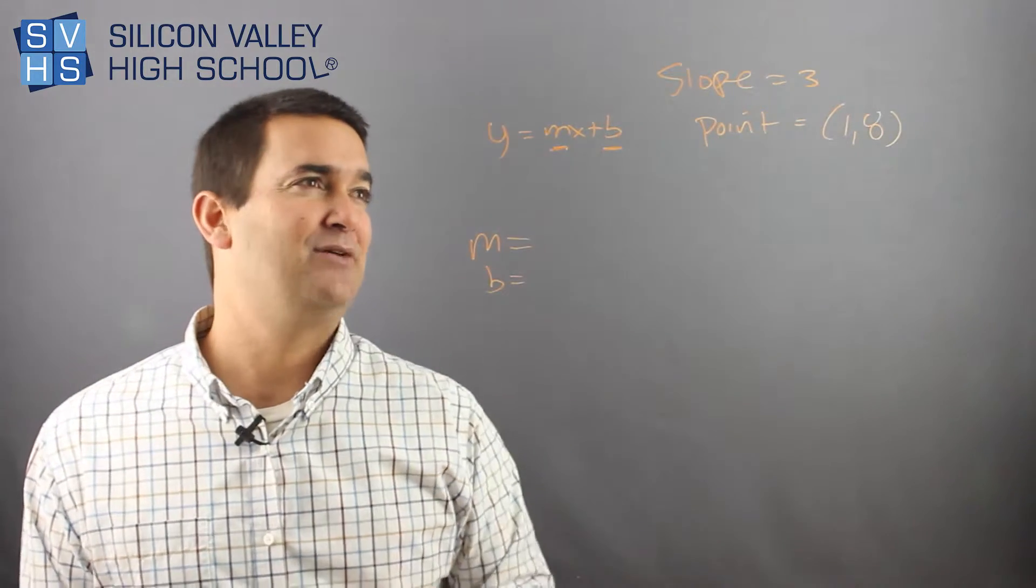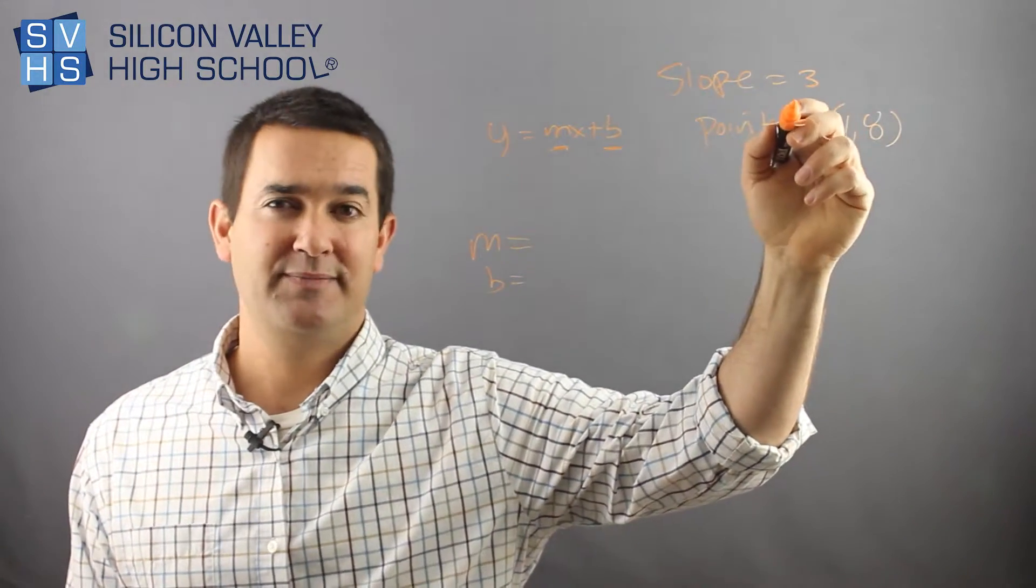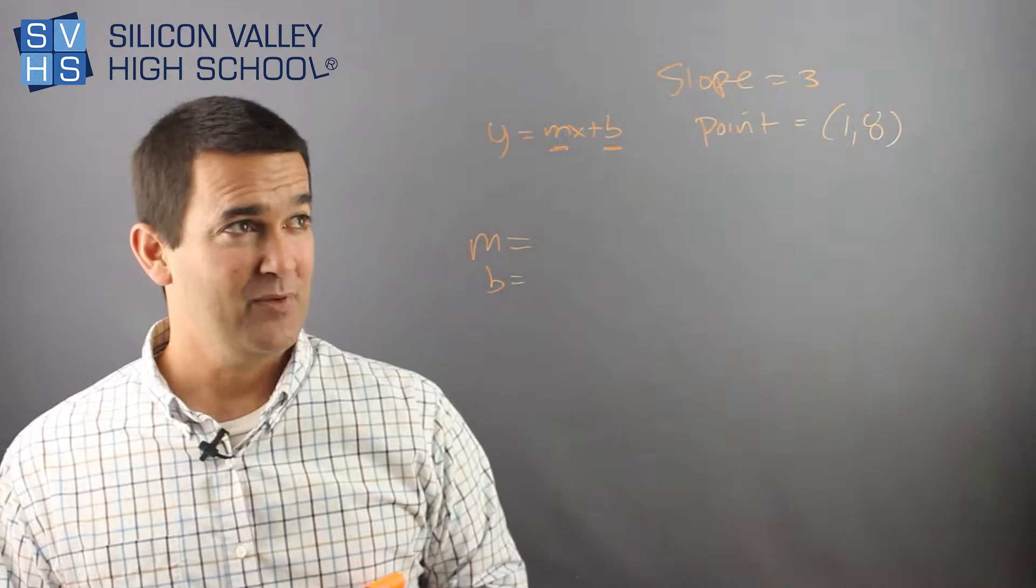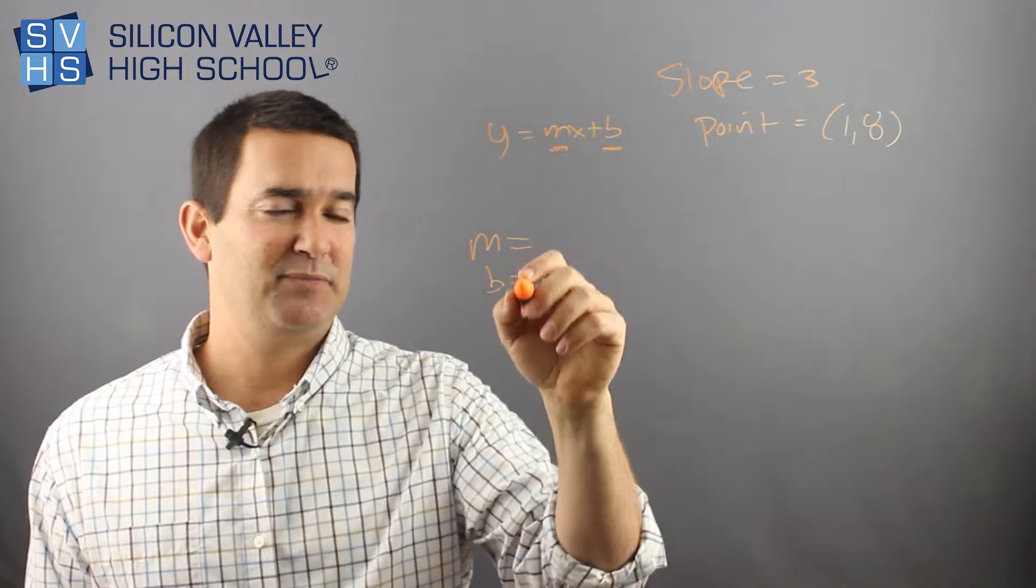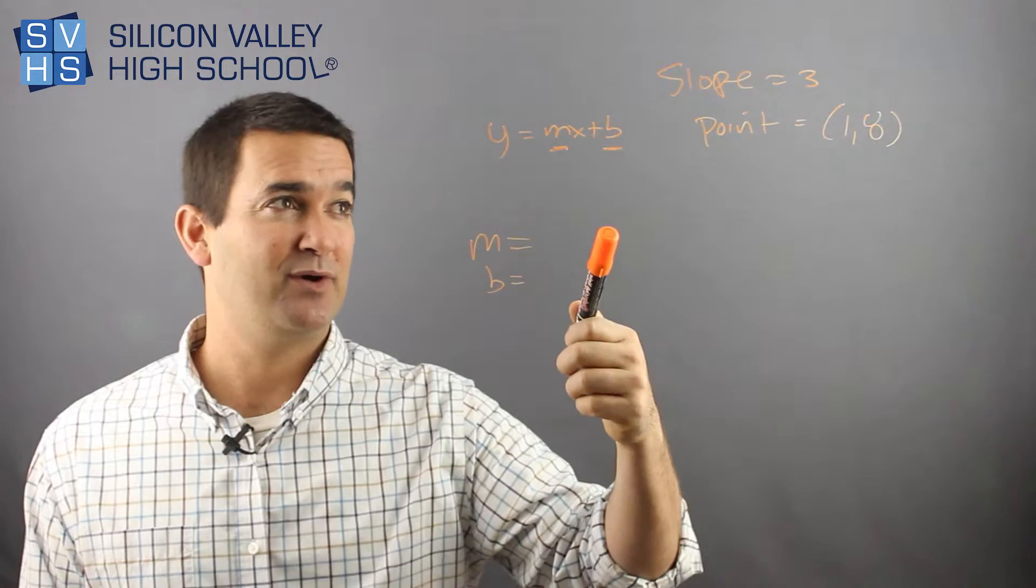So in this case, this is pretty mellow. They actually gave me, they said, find the equation of a line with the slope equal to three that goes through a point one eight, right? And so because we need these two pieces of information, sometimes they're generous and actually give us one.